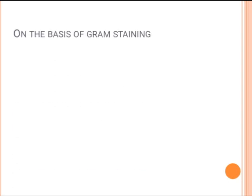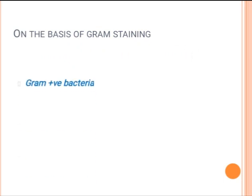In this lecture I am going to classify the bacteria on the basis of gram staining. On the basis of gram staining we have gram positive bacteria, gram negative bacteria, and some bacteria which are neither gram positive nor gram negative, and these are known as acid-fast bacteria.